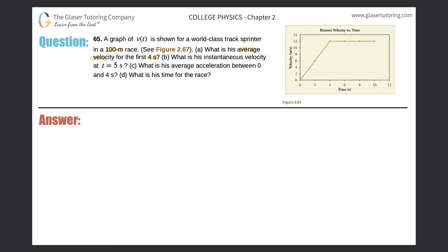Let's dissect part A. The formula for average velocity is the velocity at one point plus the velocity at a second point, divided by 2. That would be the average velocity between two particular points.